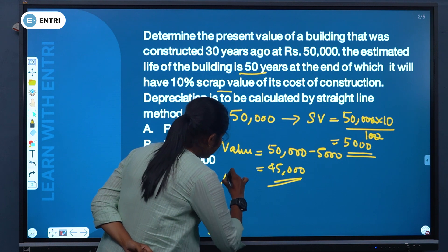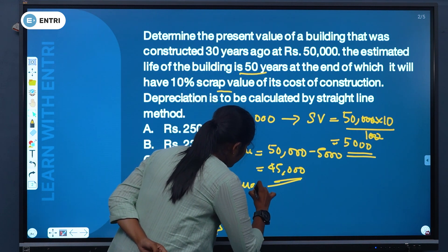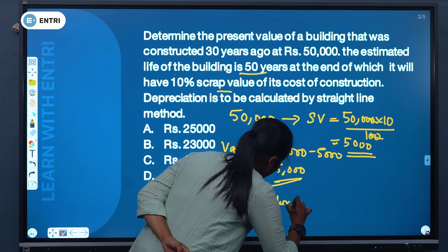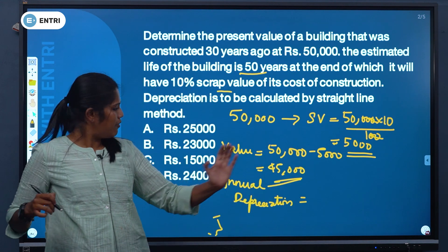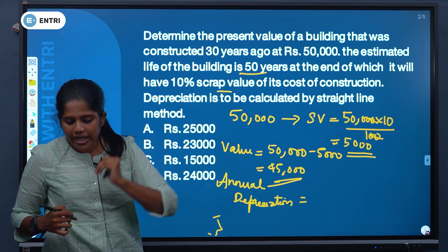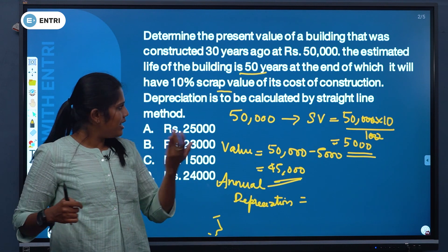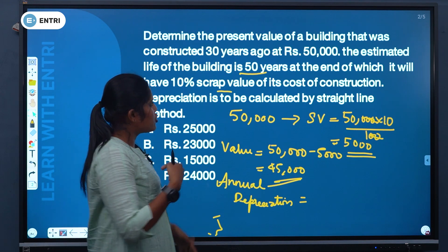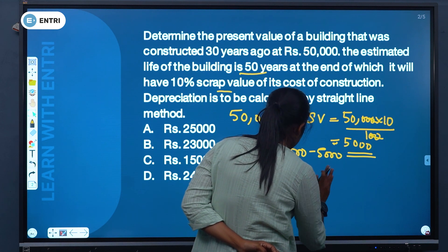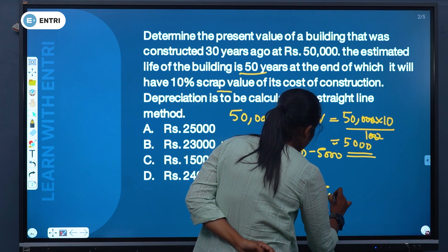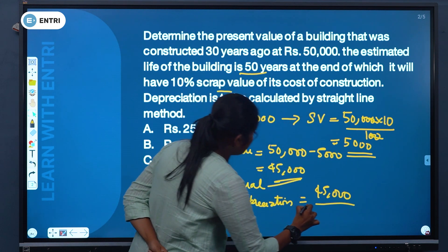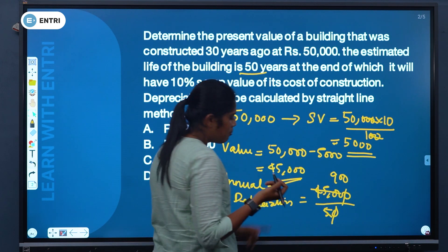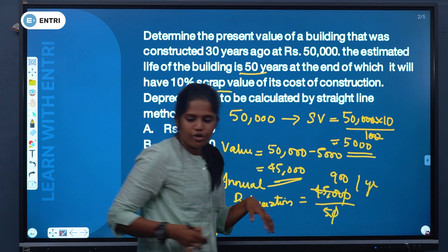Annual depreciation is the depreciable value divided by the useful life. Annual depreciation will be 45,000 divided by 50 years, giving us Rs. 900 per year depreciation.